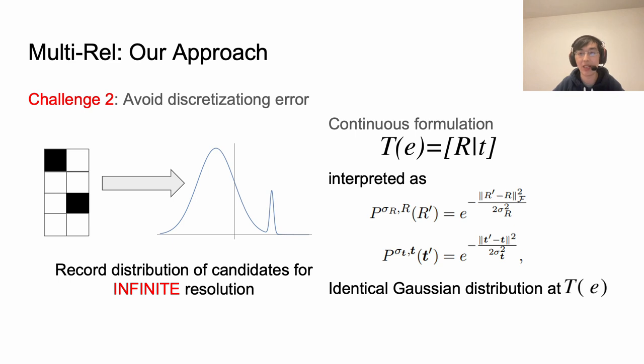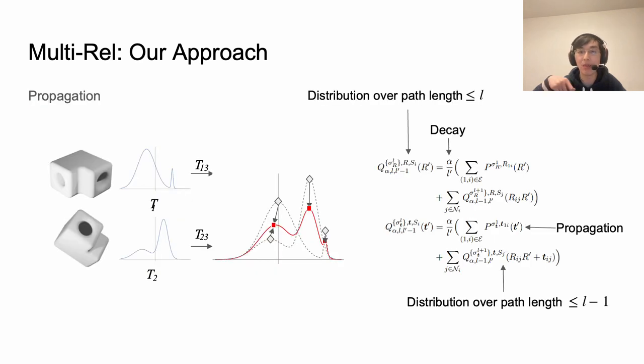To avoid the discretization error we transform the relative pose on each edge into a Gaussian distribution peaked at it with standard deviation set by a hyperparameter. We apply this technique for rotation and translation separately. The propagation step transforms the distribution implied from the neighborhood of each vertex into a new Gaussian mixture distribution. Since error may accumulate along paths, we set a decay on the component distribution weight depending on the path length. In addition we only consider paths with length smaller than the maximum length.